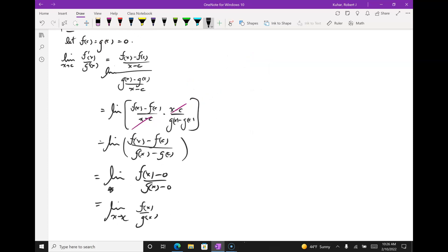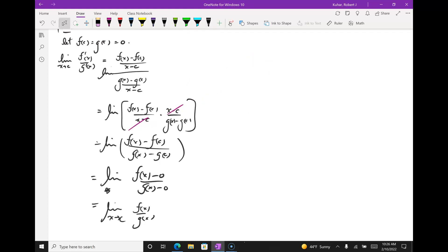Obviously, we don't need to write the minus zero. I get the limit as x goes to c of f of x over g of x. And that's what I wanted. I've got the limit of the original functions. What was the next homework problem we did?